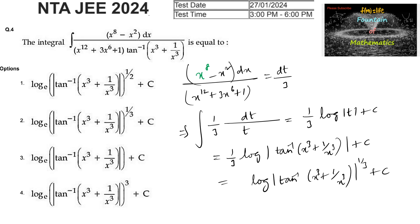So we can go with option B: tan inverse of (x power 3 plus 1 by x power 3) whole to the power of 1 by 3 plus c. Option B is the answer.